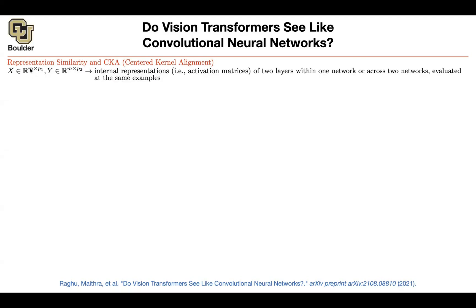Let's say you push M images — that's your mini-batch size — through a neural network, and then stop at some particular layer. That's going to give you, for each example, a P1-dimensional vector. Maybe you're flattening out your intermediate features from a tensor into a vector. You can go to the next layer, and the same number of examples are going to give you a different dimension for that particular layer.